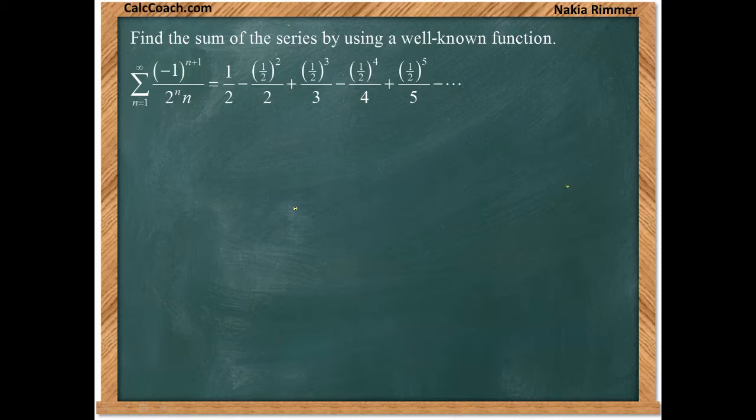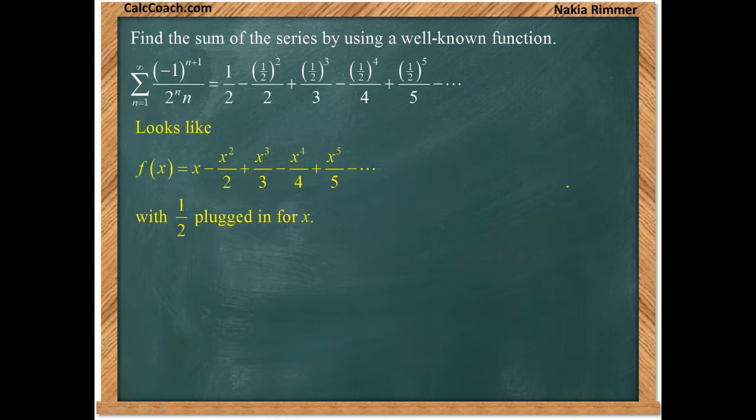We have a half minus a half squared over two, a half cubed over three, a half to the fourth over four. It is alternating. And what we can say is that it looks a lot like our function that has no factorials in the denominator and alternates.